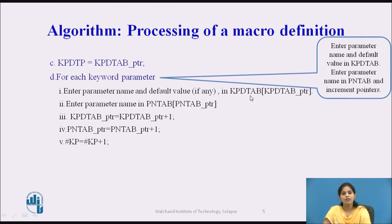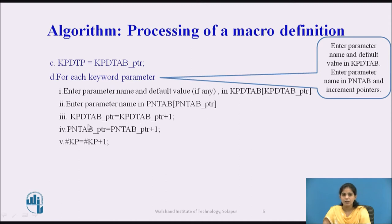After entering into the keyword parameter default table, if there is any positional parameter, it is also entered in the PN tab. We enter the parameter name in the PN tab and then increment the respective pointer variables: the keyword parameter default table pointer is incremented by 1, and the parameter name table pointer is incremented by 1. We also store the number of keyword parameters in hash KP: hash KP = hash KP + 1.